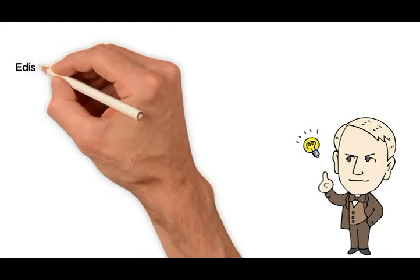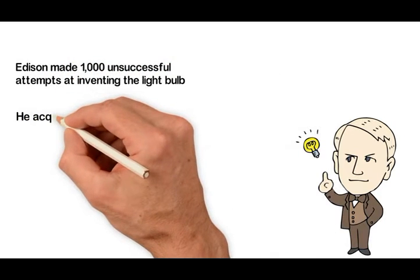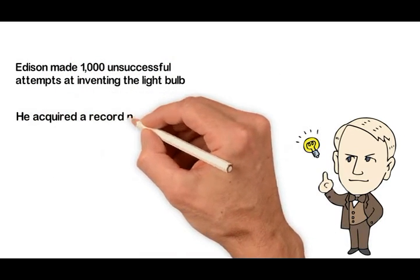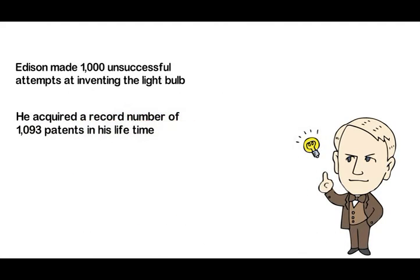As an inventor, Edison made 1,000 unsuccessful attempts at inventing the light bulb and to really have a clearer picture of who Edison was, we have to remember that he acquired a record number of 1,093 patents in his lifetime.